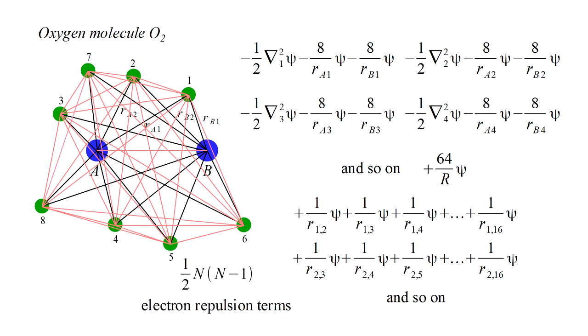For n electrons, there are one-half n times n minus one such terms. For the oxygen molecule, with sixteen electrons, this means one-hundred-and-twenty electron repulsion terms.